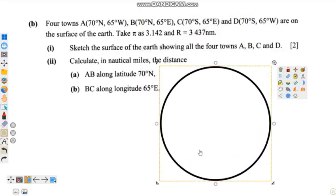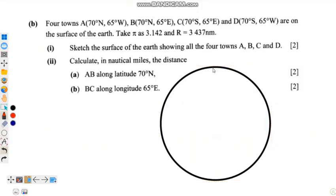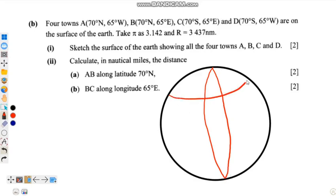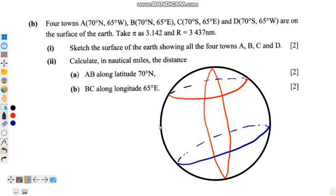We sketch the model of the earth, then draw longitudes and latitudes. We have been given four points. Point A is on latitude 70 degrees north and longitude 65 degrees west. So this longitude here will be 65 degrees west, and the latitude will be 70 degrees north — point A is placed here.